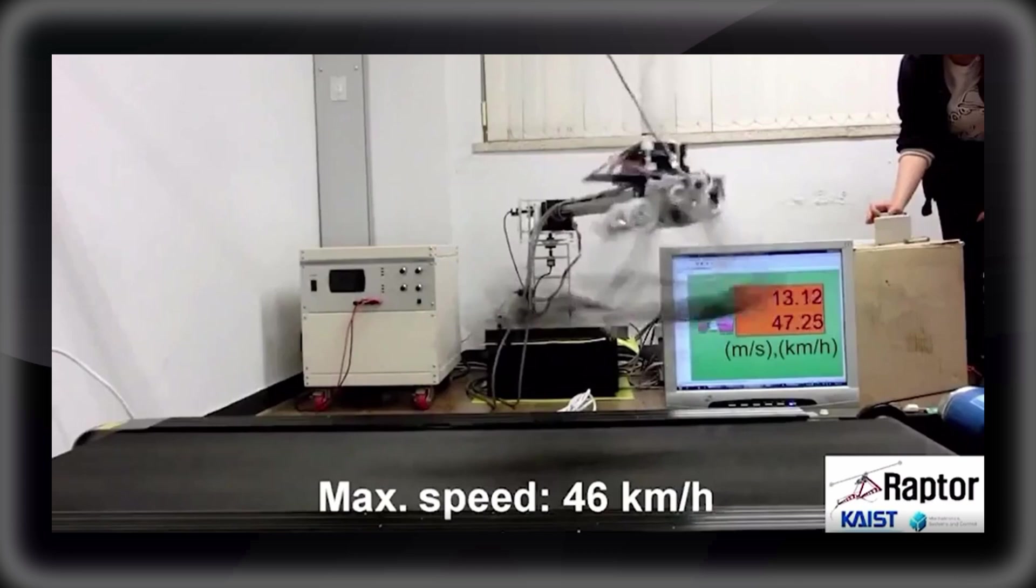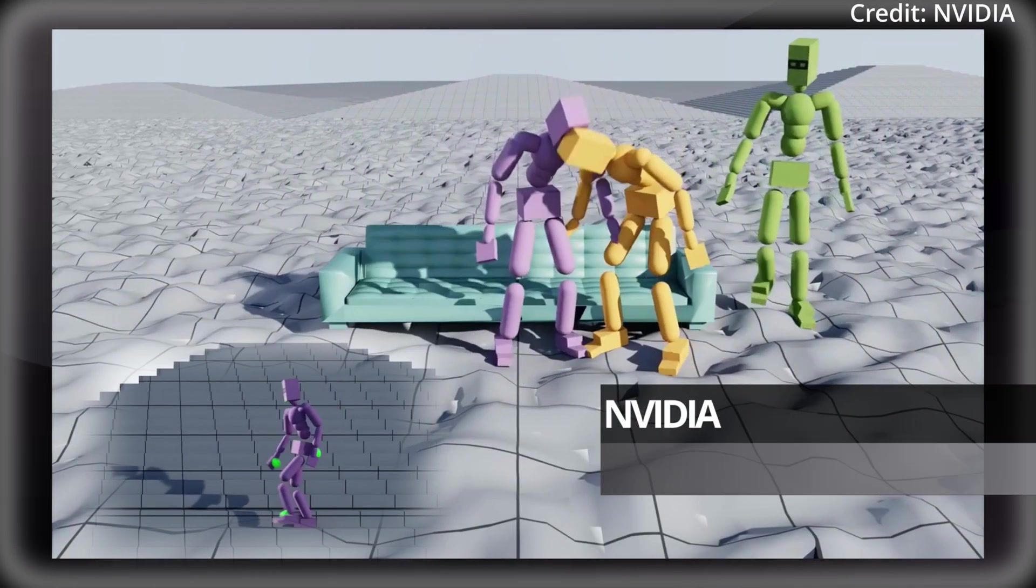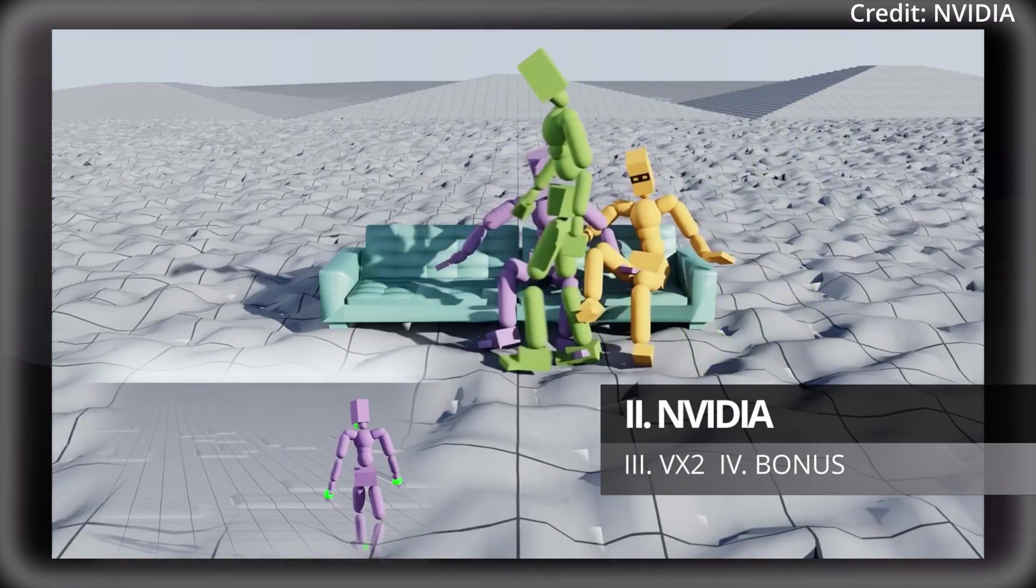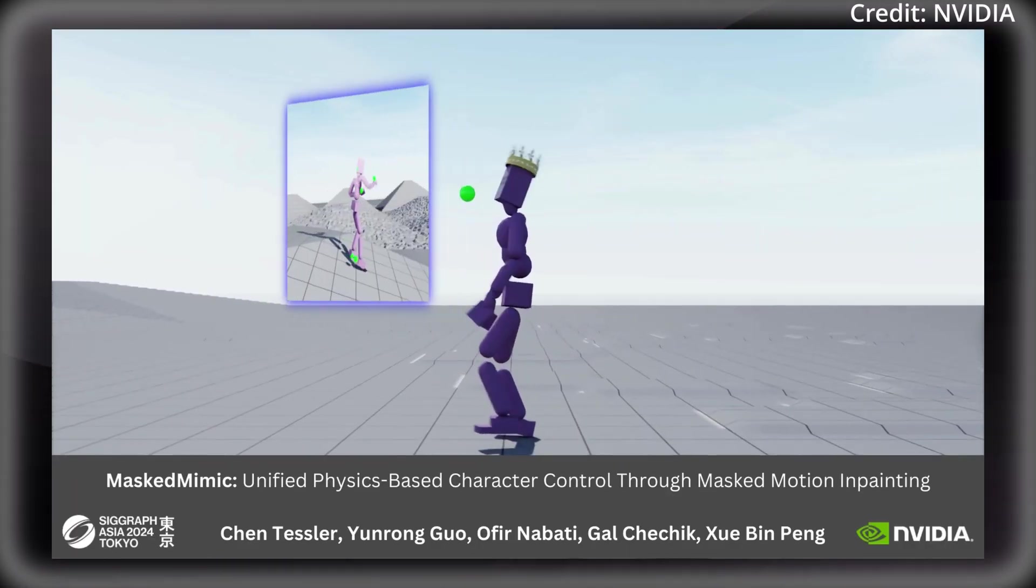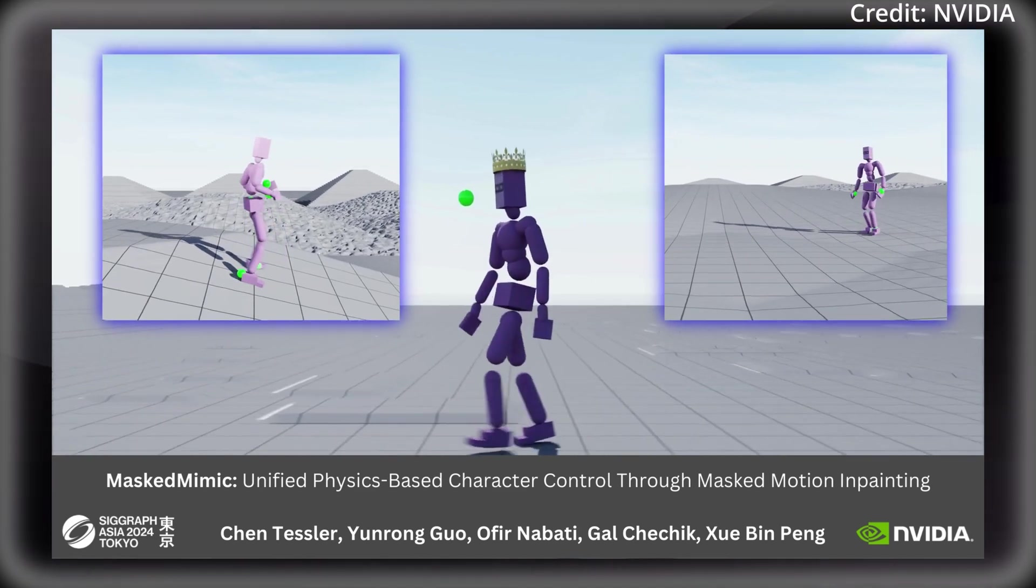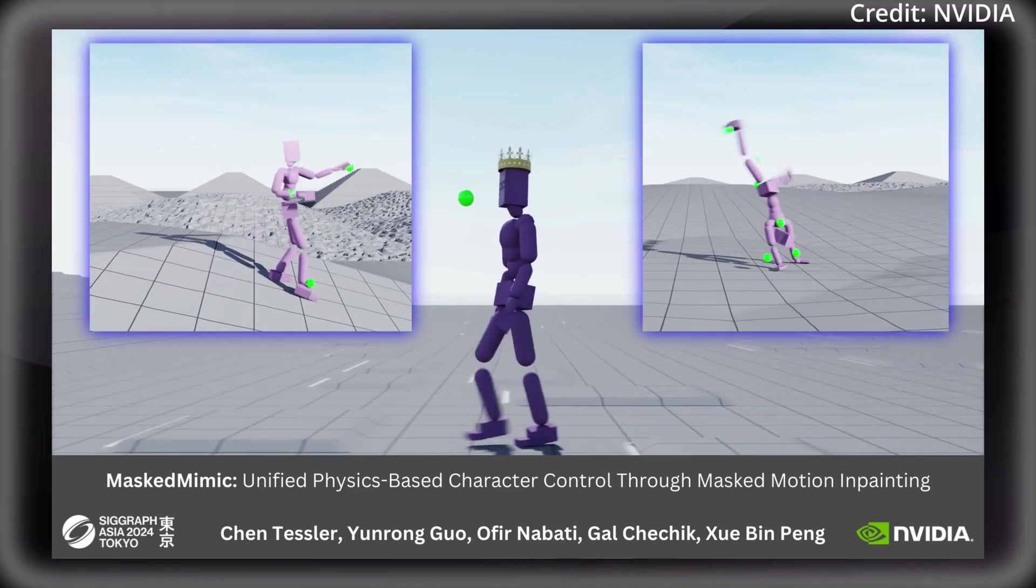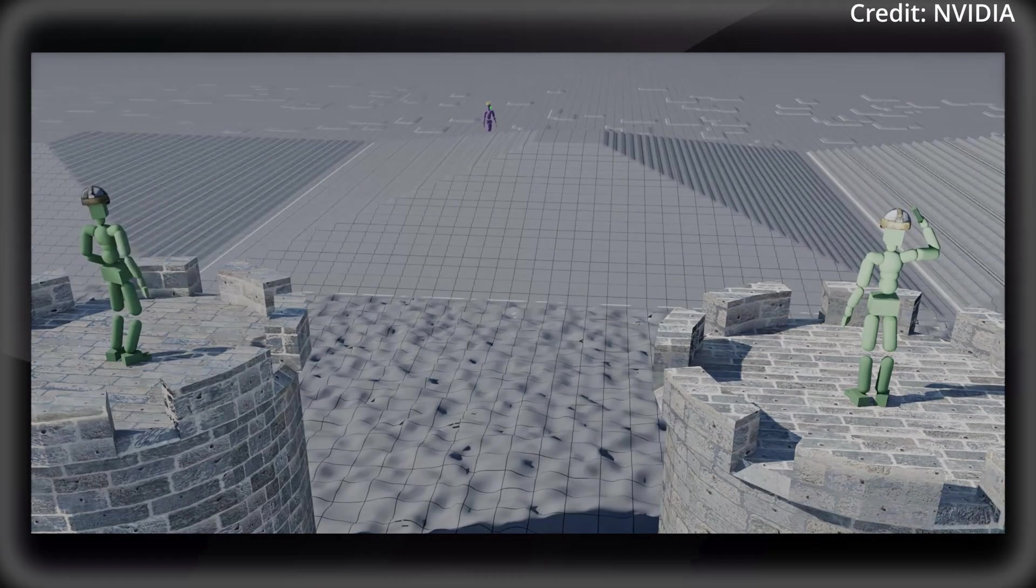NVIDIA researchers just revealed their newest AI that not only performs unbelievably complex tasks, but also explains how it works in its own words, like this. Hey, nice to meet you. I'm the Masked Mimic, a unified physics-based controller that treats the task of motion control as a masked in-painting problem. Hey, guard number two, check it out. The Masked Mimic is coming.